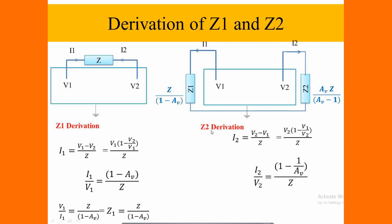Then we are writing I2 by V2 equal to 1 minus 1 by AV with respect to Z. Z2 is equal to AV into Z by AV minus 1.